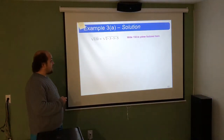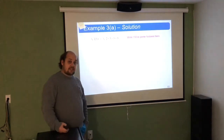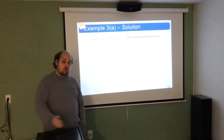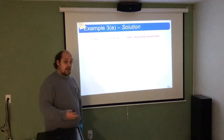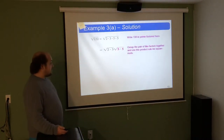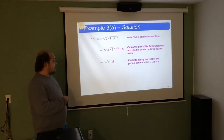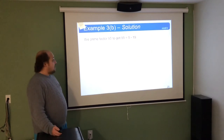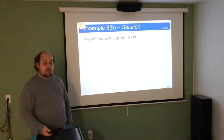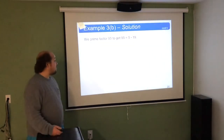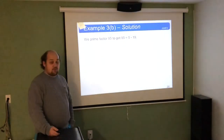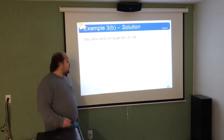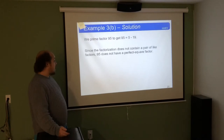Once I have the prime factorization, I look for anything repeated — in this case the 5 appears twice. A pair of the same factor under the square root means one comes out. For a cube root, three of them means one comes out, and so on. Taking out that pair of 5s, one 5 comes out, and the remaining factors 2 times 3 — or root 6 — stay inside. Final answer: 5 root 6. For the root of 95, the only factorization is 5 times 19. Neither is a perfect square, so root 95 cannot be simplified further.